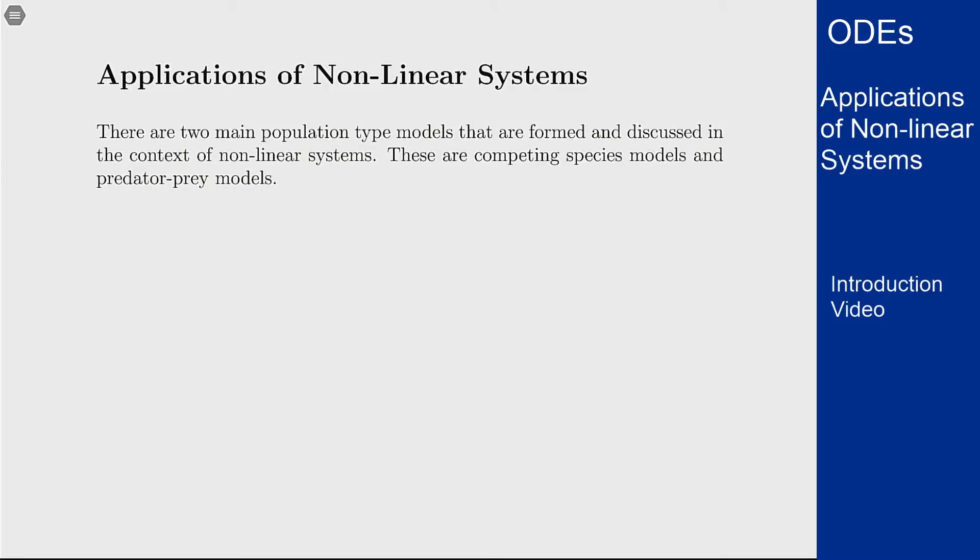In this video we'll discuss a couple of the main applications of non-linear systems to simpler models. There are two main population type models for non-linear systems: competing species models and predator-prey models. These are pretty easy to set up and that's why they're the main ones used to talk about these applications.